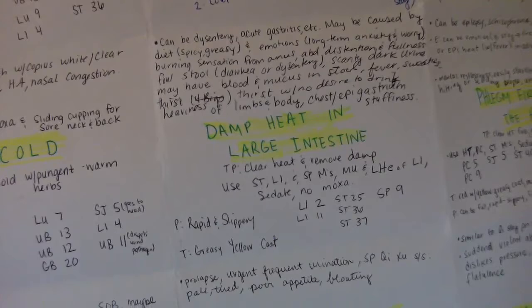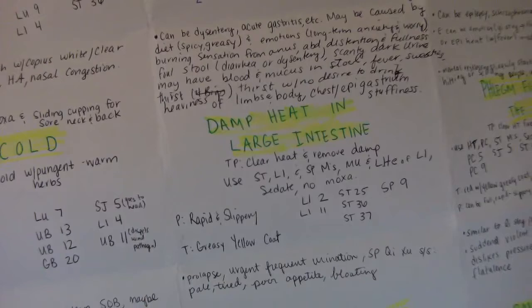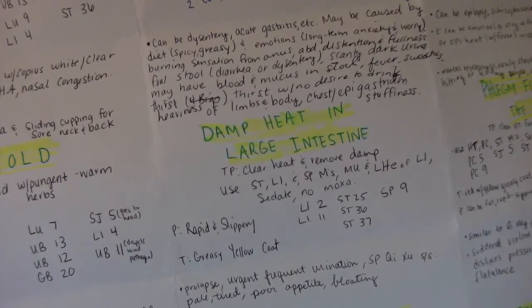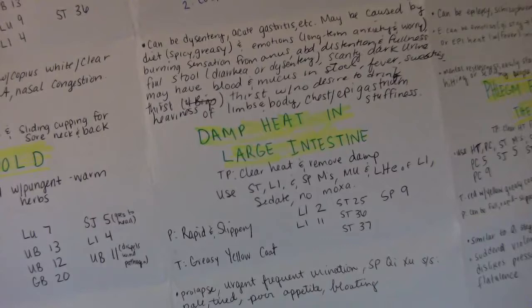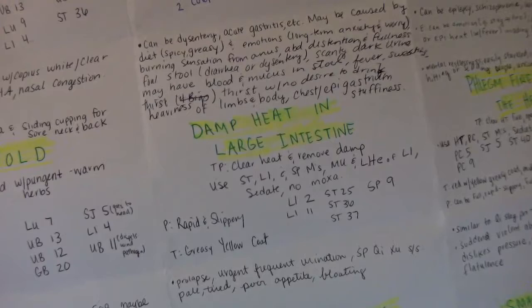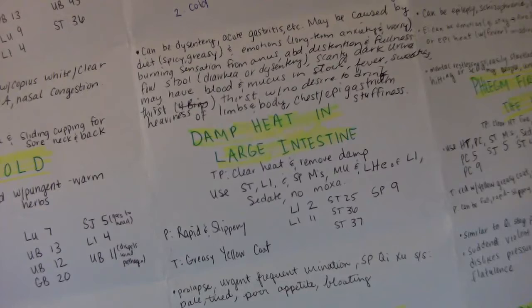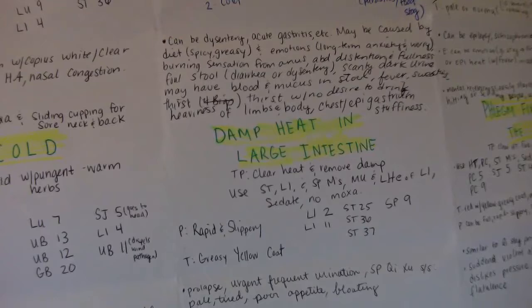Damp heat in the large intestine pulse is rapid and slippery. Tongue is greasy and yellow coat. Treatment principle is clear heat and remove damp. Use stomach, large intestine, and spleen meridians and the muu and lower hasi of the large intestine. We sedate and do not use moxa.